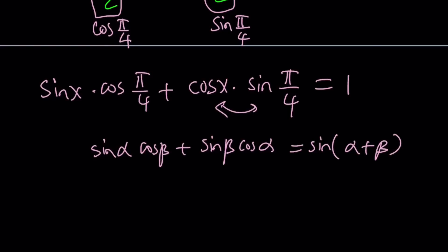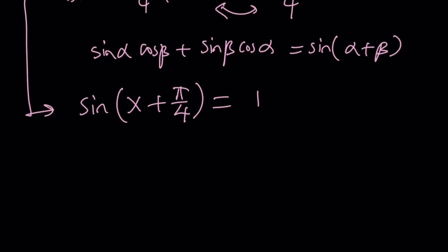So, this is equivalent to sine of x plus pi over 4 equals 1. Now, you're thinking, sine of which angle is 1? The answer is pi over 2, right? So, this one equals pi over 2 on the unit circle. But you can also add multiples of 2 pi. So, x plus pi over 4 is pi over 2 plus 2n pi, which is even multiples of pi.